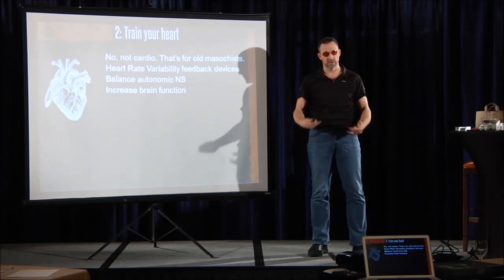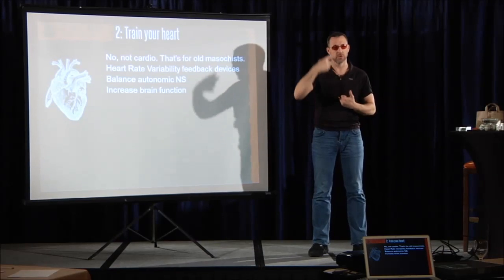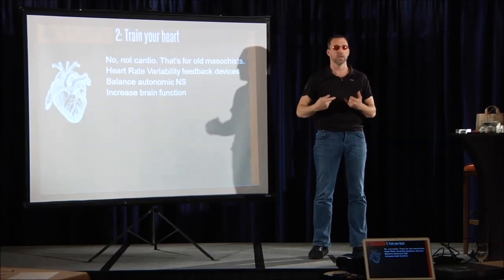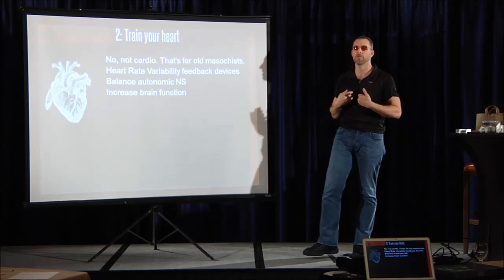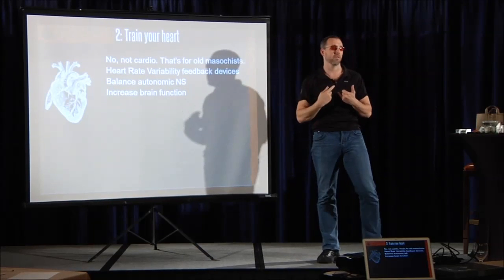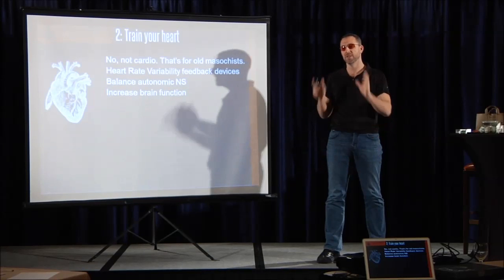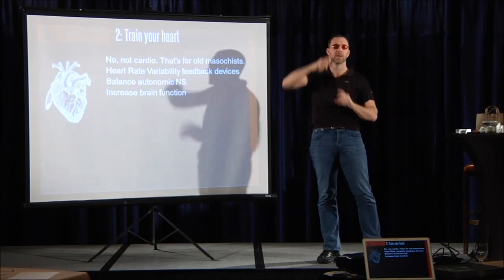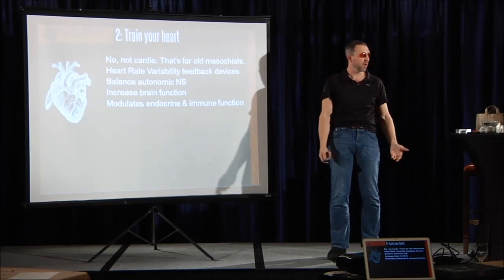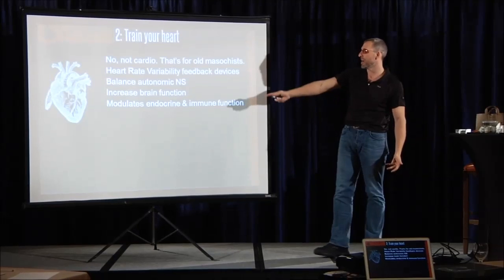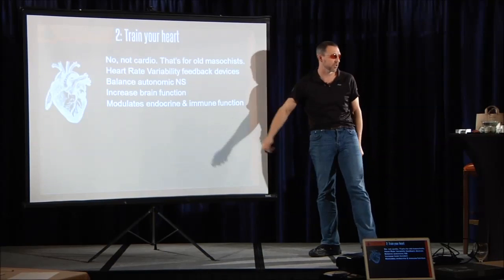It also increases your brain function. 80% of the nerves between your heart and your brain run from your heart to your brain, not from your brain to your heart. Your heart is a seat of emotion and it is part of your nervous system. In fact, it's part of your brain. You have a brain brain, you have a heart brain, you have a gut brain, and they're an integral system. It turns out heart rate variability when you're trained will modulate your endocrine function, your hormones, and your immune function.